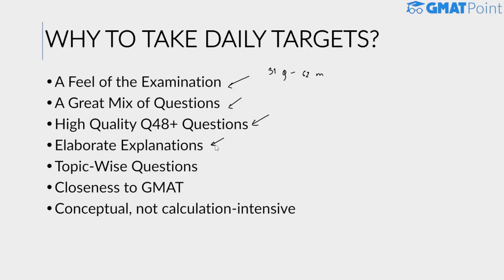Fourth, elaborate explanations. If you solve five questions, get two right and three wrong, it doesn't make sense if you don't know which concept you missed or why you got them wrong. So once you are done with your test, you will immediately be able to access the elaborate explanations. There are certain video explanations as well, though not all questions have video explanations — but they all have detailed text explanations. You can refer to them to see which concept you are missing and plan your preparation accordingly.